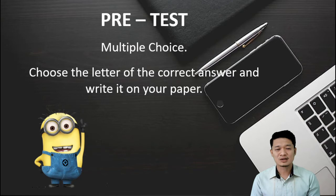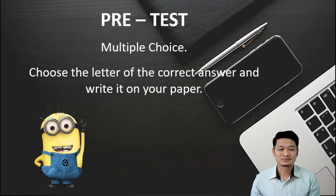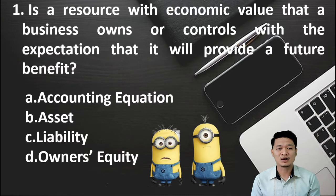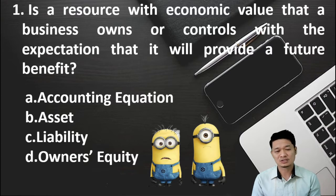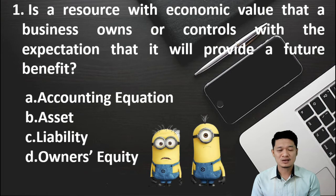Now, let's start our pre-test. It is a multiple choice. Choose the letter of the correct answer and write it on your paper. For number 1: Is a resource with economic value that a business owns or controls with the expectation that it will provide a future benefit. Is it letter A, accounting equation? Letter B, asset? Letter C, liability? Or D, owner's equity?